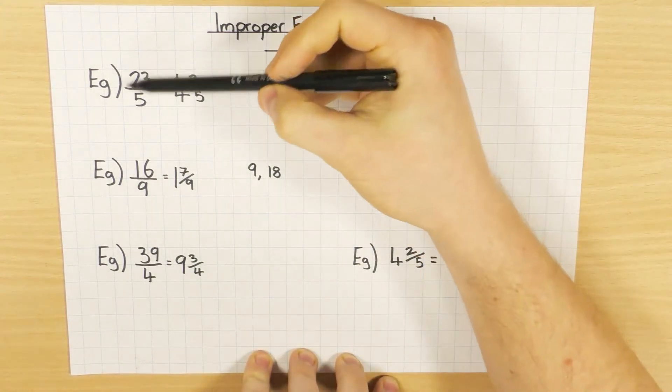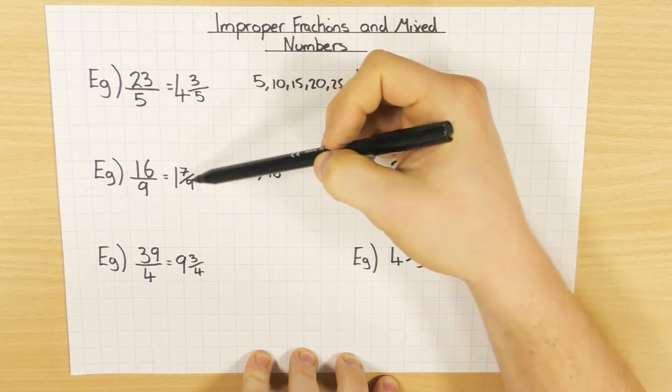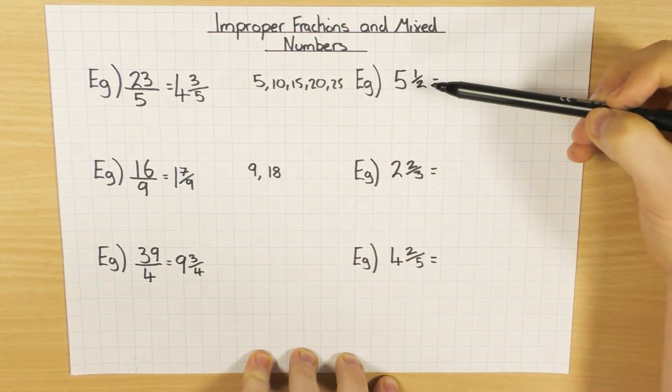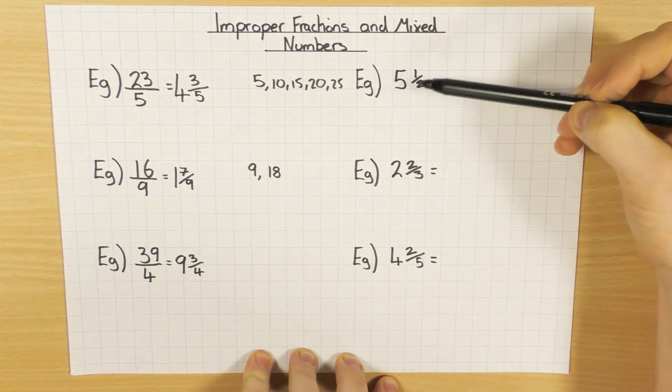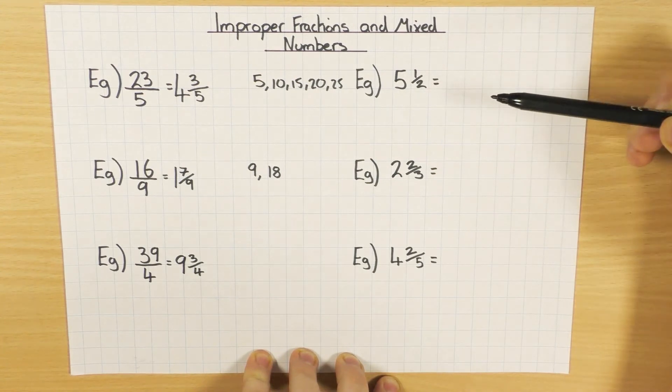So that's how to go from an improper or top-heavy to a mixed fraction. So the other part is to go from a mixed number to an improper or top-heavy fraction.